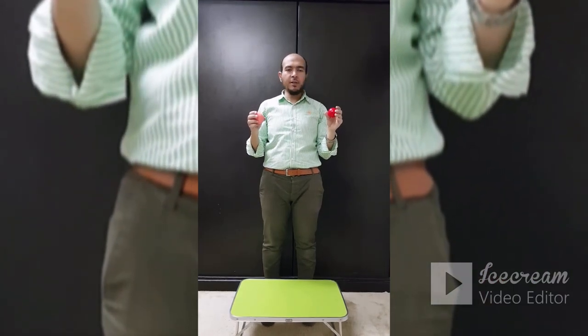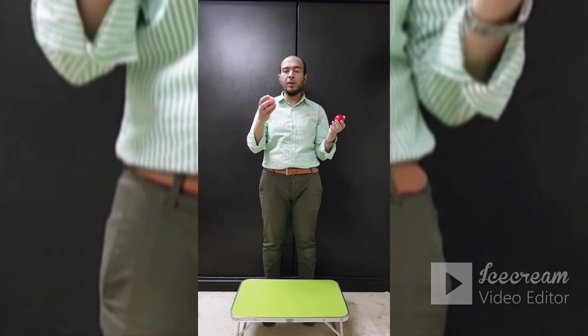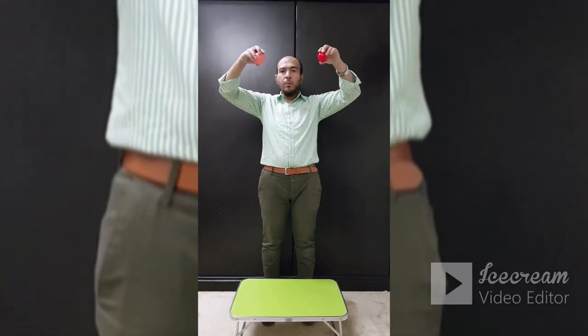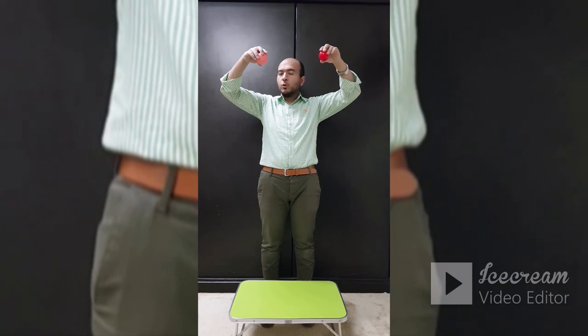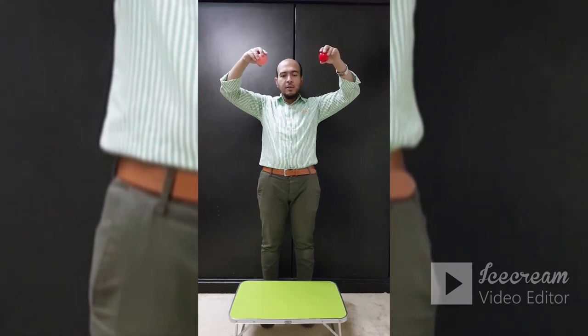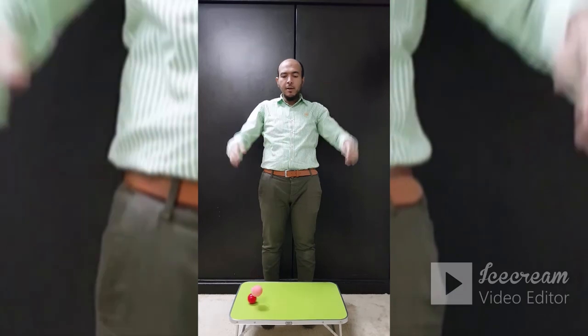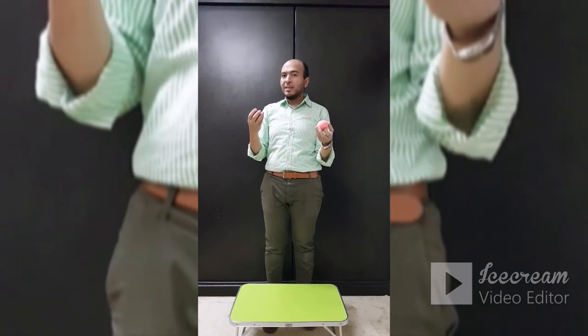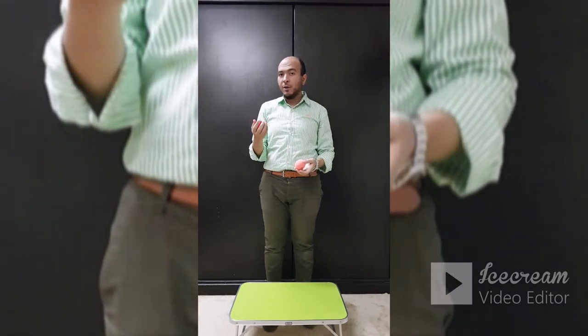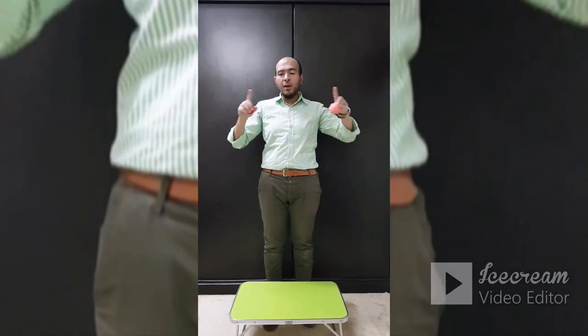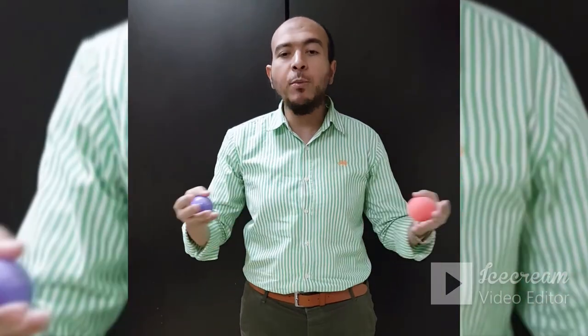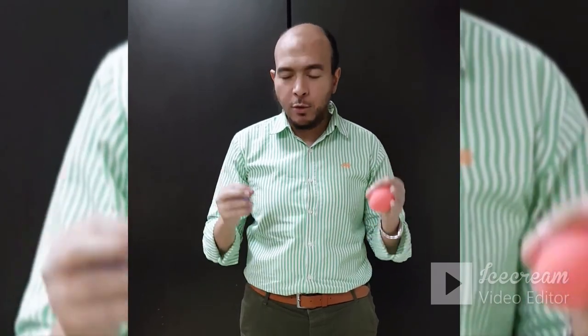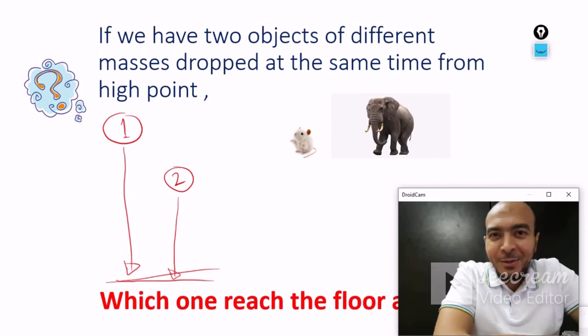Now I have different materials — this one is plastic, and this one is a lighter bunch. I will release both at the same time. Three, two, one — the plastic reaches the ground first. Not because it is heavier, but because of air resistance. In fact, if we remove all air resistance, both of them reach the floor at the same time.